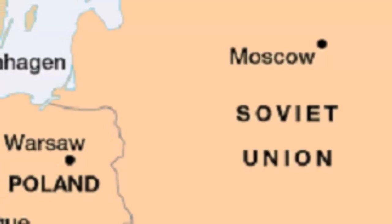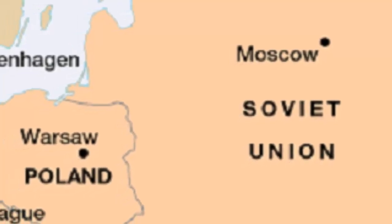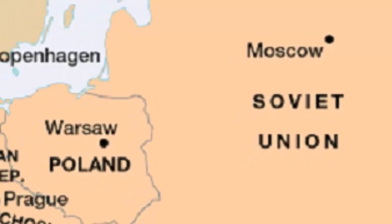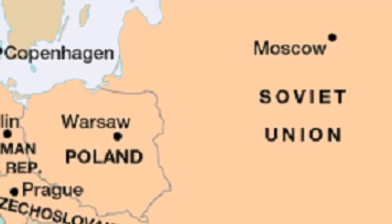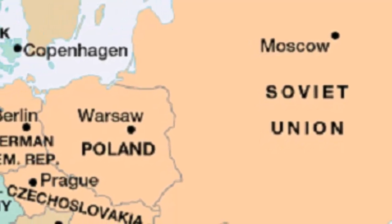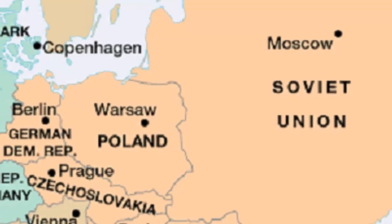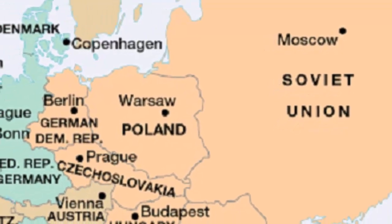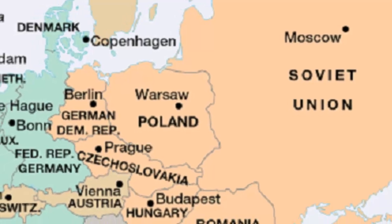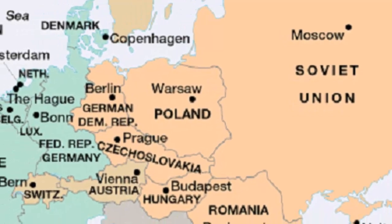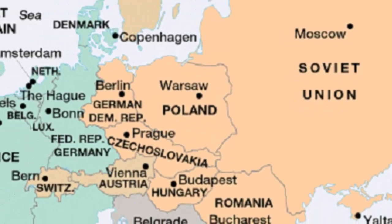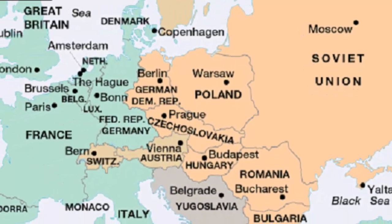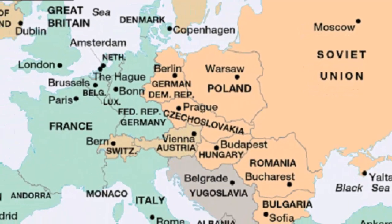So as World War Two was coming to a close in Europe, the Nazis would surrender their conquered territory to Russia — or the Soviet Union, as it's known at this time. These territories included Albania, Bulgaria, Hungary, Czechoslovakia, Romania, Poland, and Yugoslavia. What's most important about these countries is that they were along the western border of the Soviet Union.